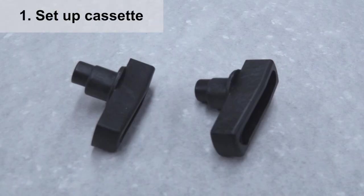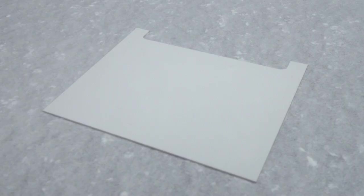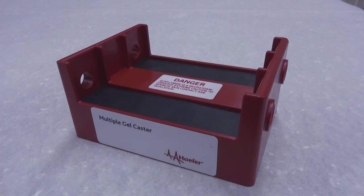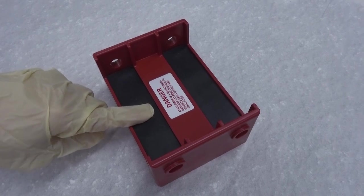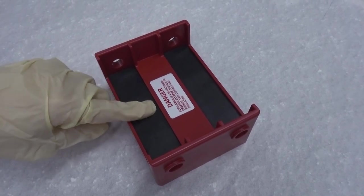To set up a cassette, you should have two black knobs, a glass plate, a white aluminum oxide ceramic plate, a comb, two spacers, a gel caster, and a gel rack. This type of gel rack can hold two cassettes. It has a rubber gasket at the bottom to reduce the risk of gel solution leakage.